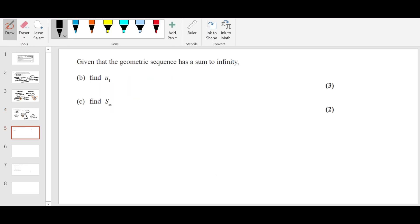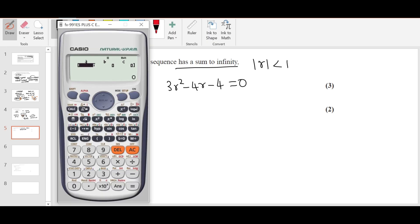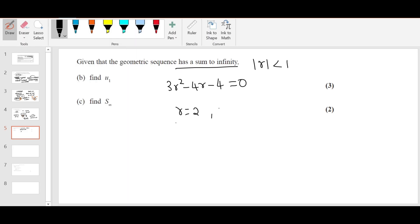Move on to part B. Given that the geometric sequence has a sum to infinity. What does that mean? That means the modulus value of R should be smaller than 1. We got the equation 3R squared minus 4R minus 4 equals 0. We need to solve it. 3, minus 4, minus 4. I get 2 and minus 2 over 3. R equals 2, R equals minus 2 over 3. Since modulus R is less than 1, R should be minus 2 over 3, not 2.